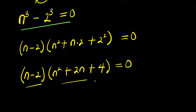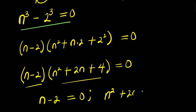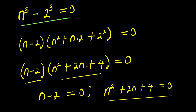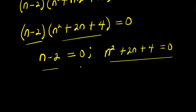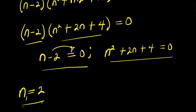Let's equate each factor to zero. We have n minus 2 equals zero, and n squared plus 2n plus 4 equals zero. Solving the linear equation, I simply get n equals 2. This is my first solution, n₁.